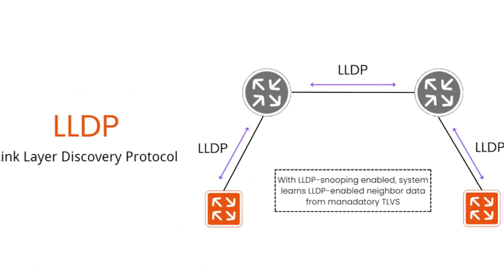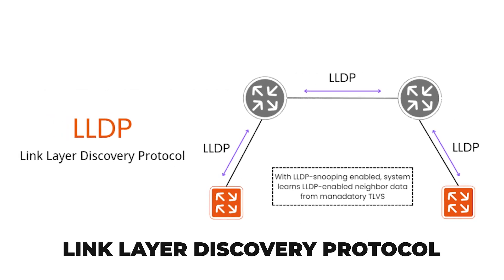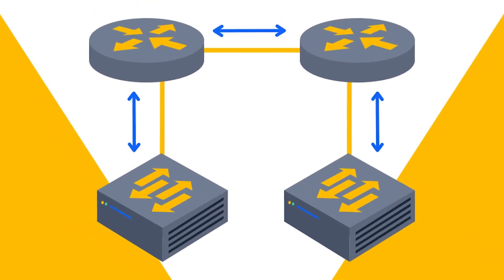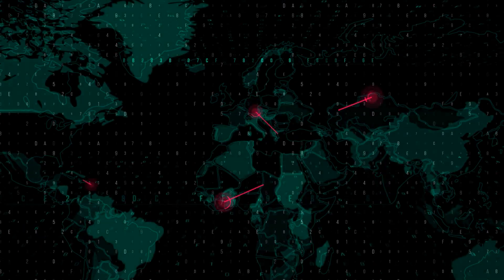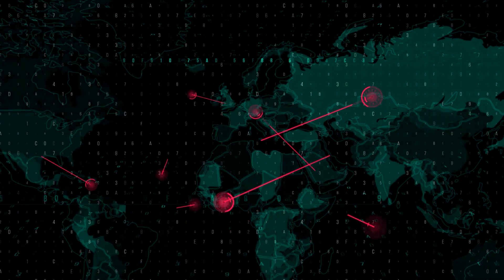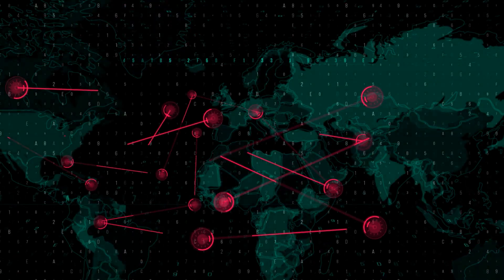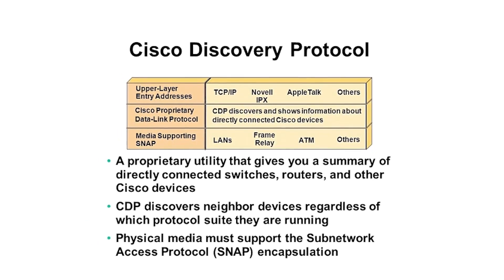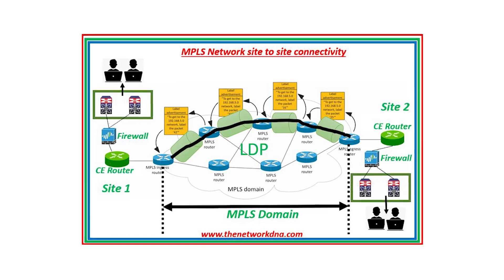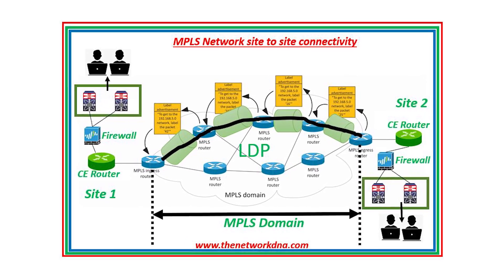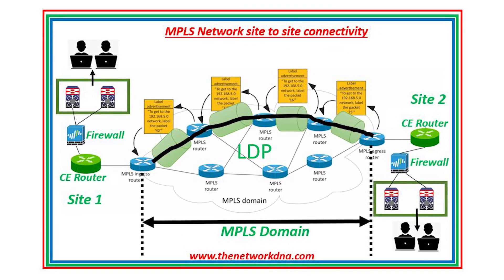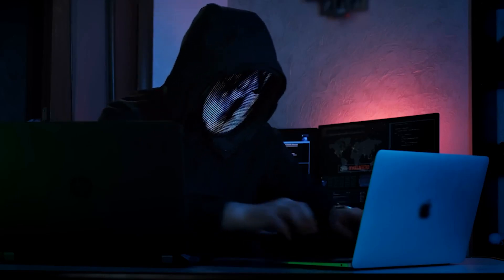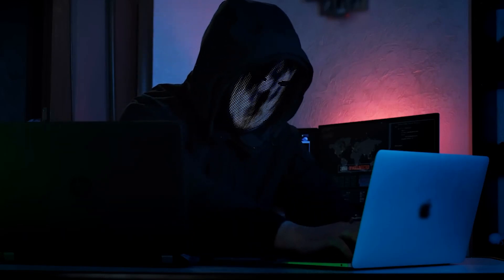LLDP, or Link Layer Discovery Protocol, is like name tags at a networking event, allowing devices to announce themselves and learn about their neighbors. While useful for network mapping, if left unsecured, it provides hackers with a directory of potential targets. CDP, or Cisco Discovery Protocol, is LLDP's Cisco-specific counterpart — like a VIP guest list at an exclusive party. While great for network management, it can spill too many beans if a hacker gets access.